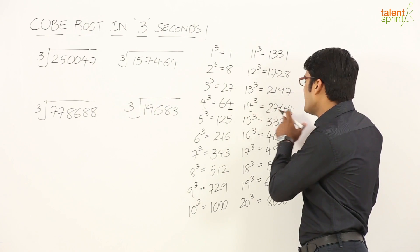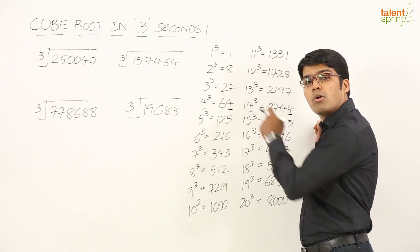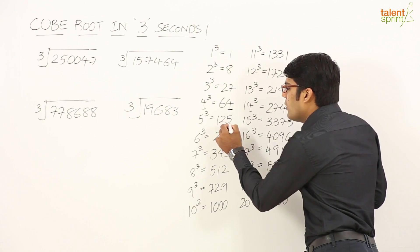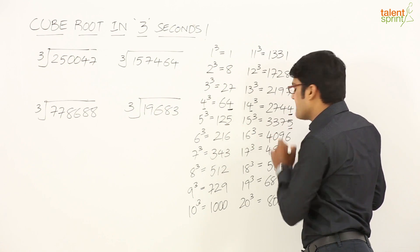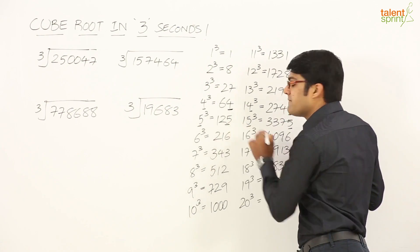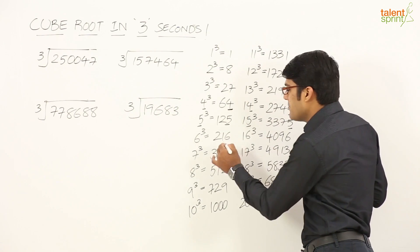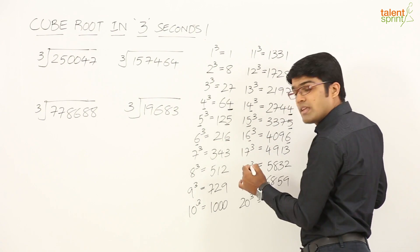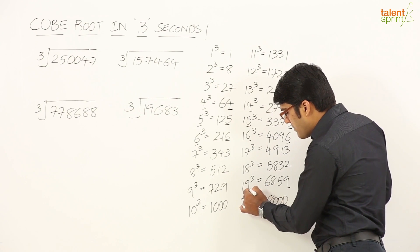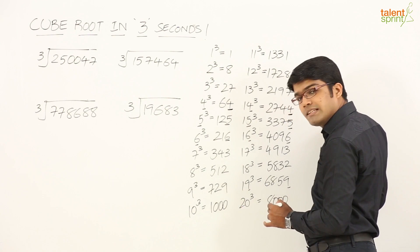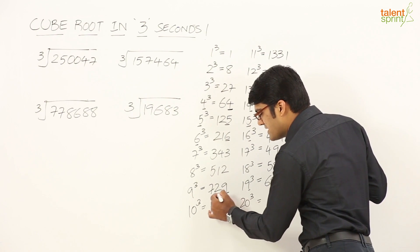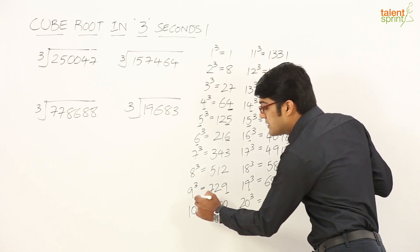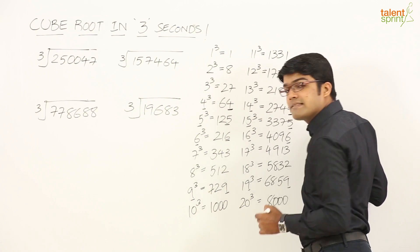So when a number ends in 4, its cube root also ends in 4. Likewise, when a number ends in 5, its cube root ends in 5. When a number ends in 6, the cube root ends in 6. And when a number ends in 9, the cube root ends in 9. For example, 729 ends in 9 and its cube root ends in 9.